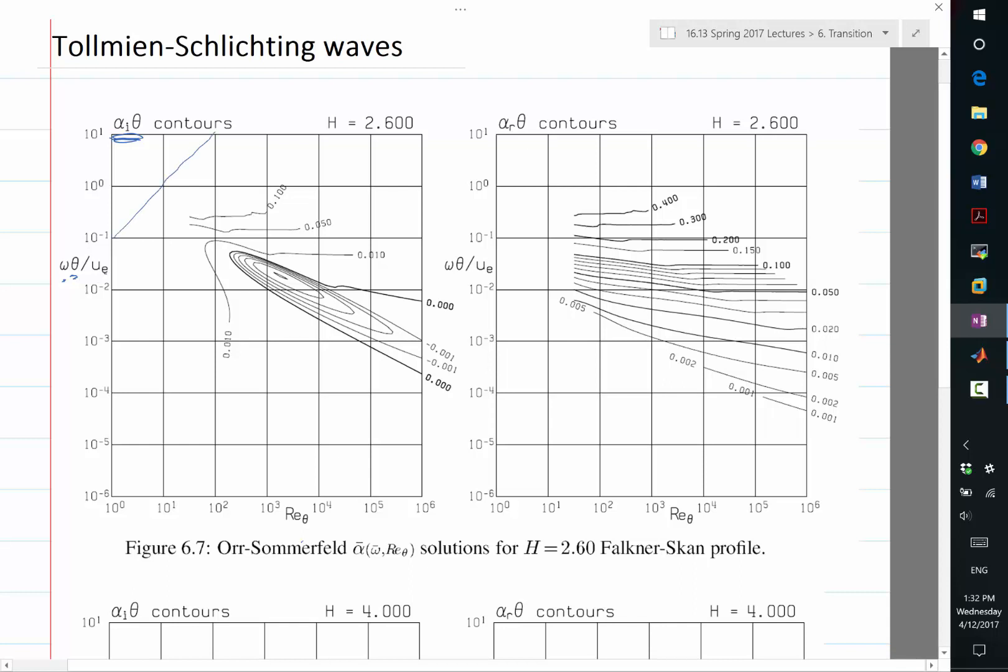For example, for a high frequency oscillation I would be tracing such a line. If this is the frequency I'm looking at, would that be high frequency? Anything that is upward is higher frequency because the y-axis is the non-dimensionalized frequency. A line closer to the top corresponds to a higher frequency. Actually you can calculate exactly what it is because Re_theta is just u_e theta divided by nu.